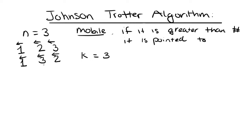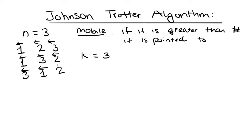Now let's check mobile numbers. 2 is not a mobile number because it's pointing to 3 and 3 is greater than 2. But 3 is pointing to 1, and 3 is greater than 1, so 3 is a mobile number. 1 is not a mobile number because it's pointing to nothing. So we have one mobile number — 3 — and we switch it again, giving us 3, 1, 2.